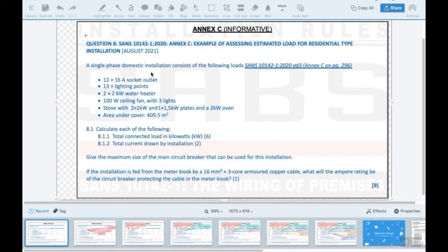The way to look at this first section here, this is for six marks. You're going to work out the watt or kilowatt for each one of these and then add it up at the end, and that would be your total connected load in kilowatts. Then you have to calculate the current drawn using this power formula.